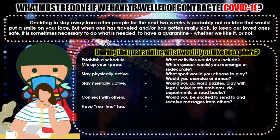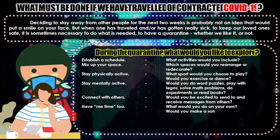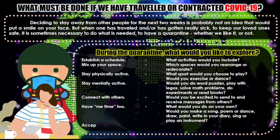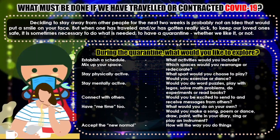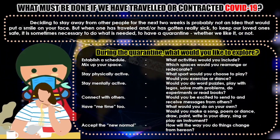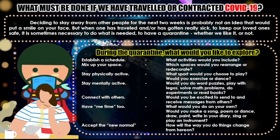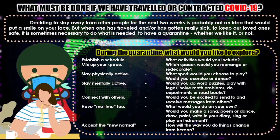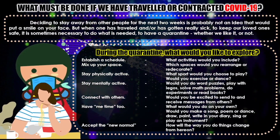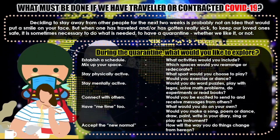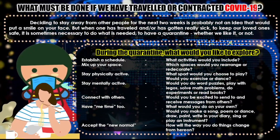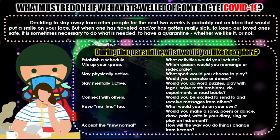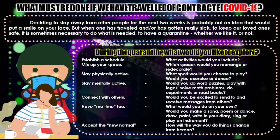During quarantine, there are a lot of things you can do. First, you can establish a schedule — what activities would you include? You can also rearrange or decorate your space at home. Stay physically active — would you exercise, play a sport, or dance? Stay mentally active — do word puzzles, play with LEGOs, solve math problems, do experiments, or read books. Connect with others by sending and receiving messages.